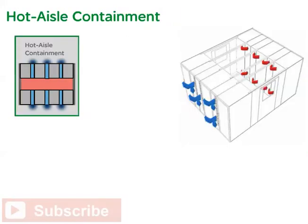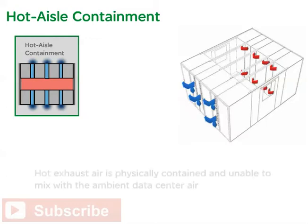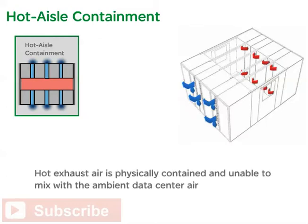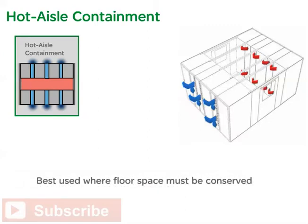Hot aisle containment pods are identical to uncontained pods, except for the fact that the hot aisle in every pair of rows is contained. The hot aisle becomes the hot exhaust channel by enclosing it with ceiling panels and a door at each end of the aisle. In addition, the rack's rear doors are removed. The hot exhaust air is physically contained and unable to mix with the ambient data center air. A wall or another row of racks is required to form a cold aisle in order to isolate the cold supply air. This method is best suited for sites where floor space must be conserved.